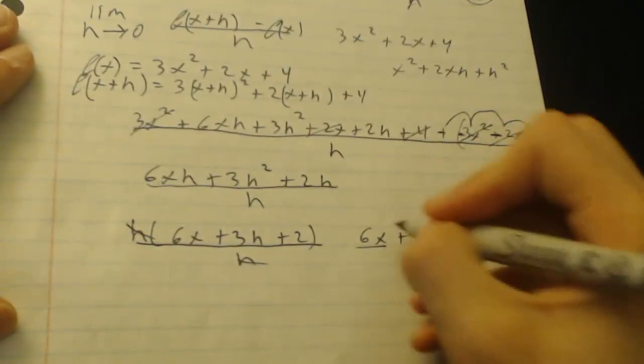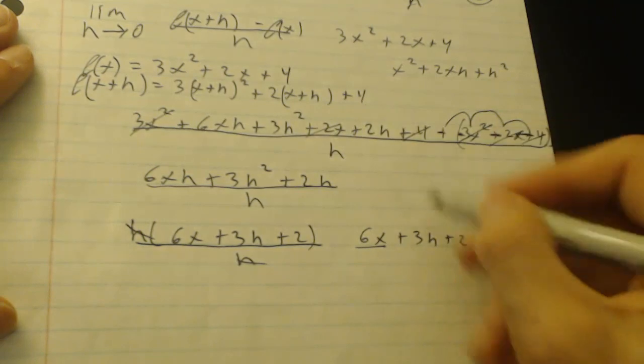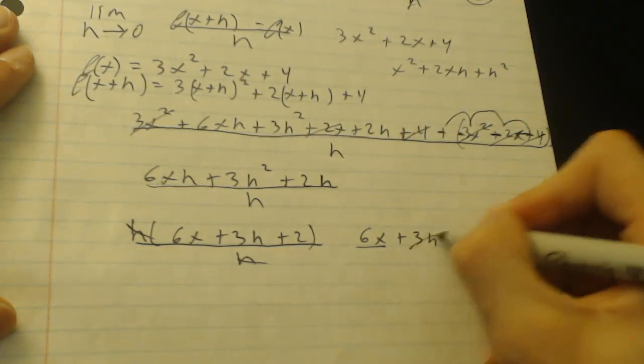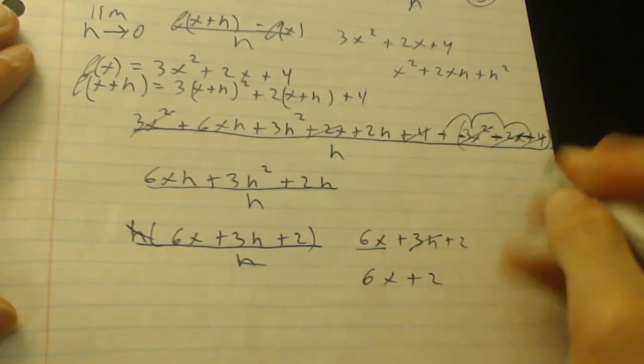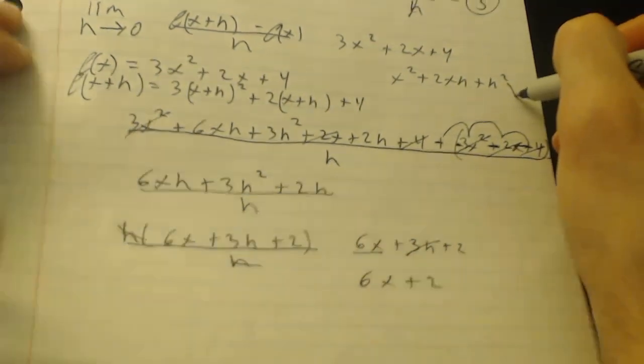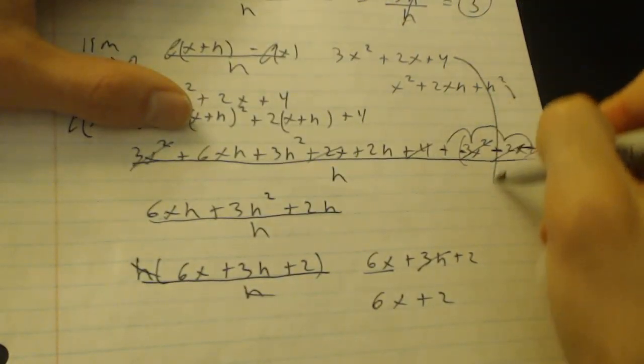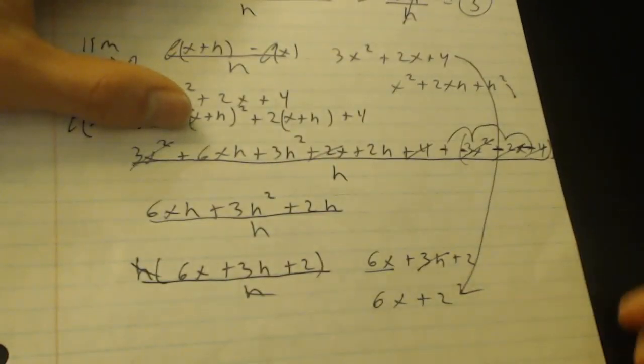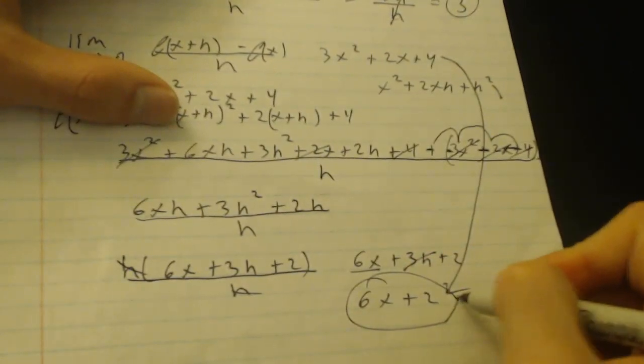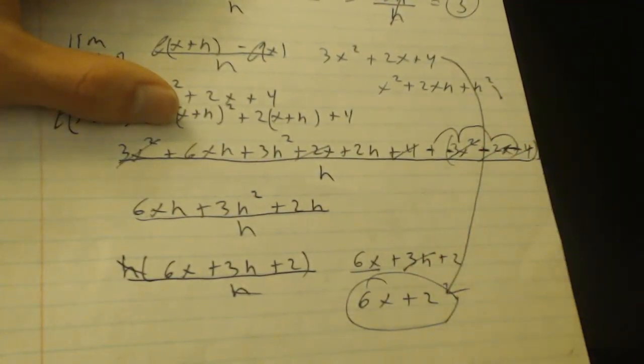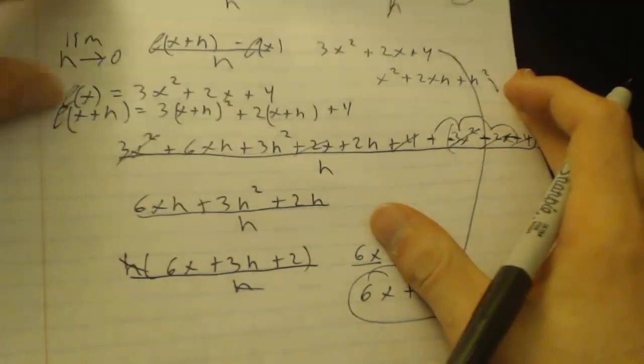So we're left with 6x plus 3h plus 2. Now you just plug in h equals 0, and the 3h cancels out. And we're left with 6x plus 2 as the derivative of 3x squared plus 2x plus 4. Now it's simple enough. If you need to go look back at it, you can.